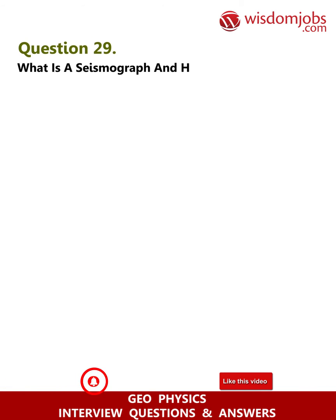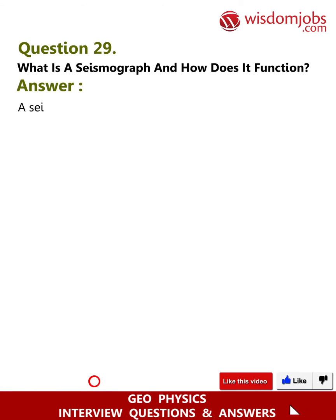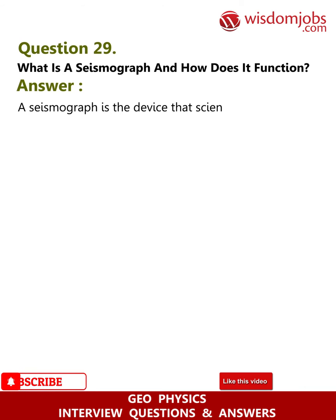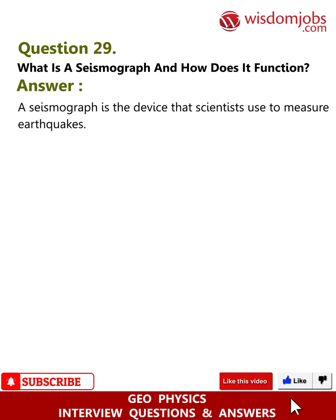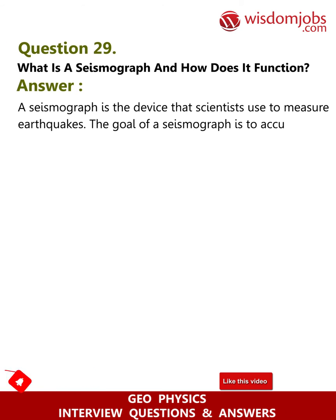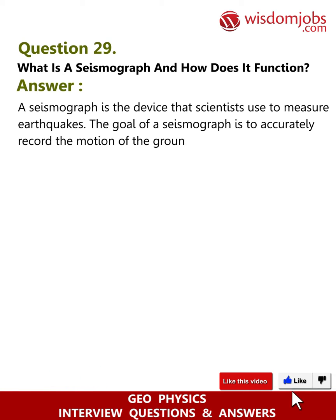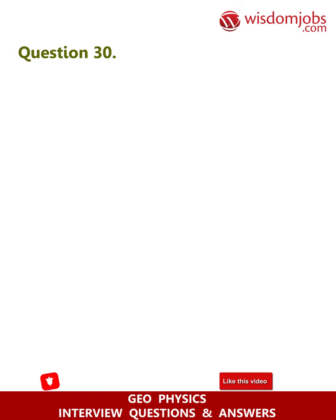Question 29: What is a seismograph and how does it function? Answer: A seismograph is the device that scientists use to measure earthquakes. The goal of a seismograph is to accurately record the motion of the ground during a quake.